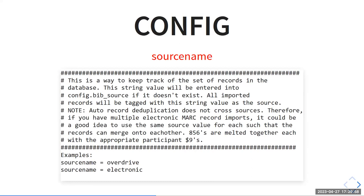If you have multiple electronic mark record imports, it might be a good idea to use the same source value for each, so records can merge onto each other. For example, if you expect OverDrive records and Hoopla records, and there might be some overlap, you might set the source name for both config files to something generic like 'electronic', so it can dedupe across the two different vendor sets of bibs and merge the 856s together with the appropriate participant nines. Examples in the config: source_name equals overdrive, or source_name equals electronic.